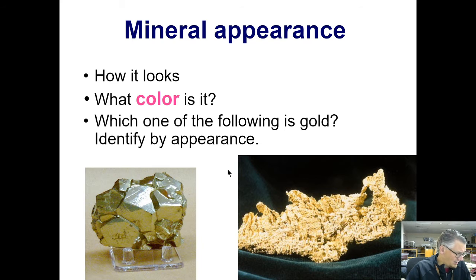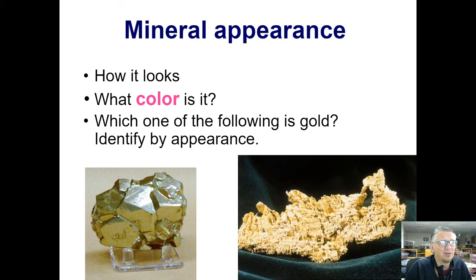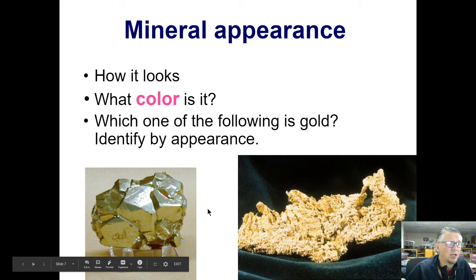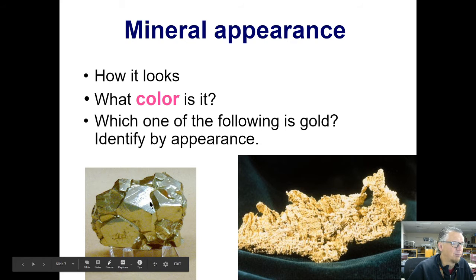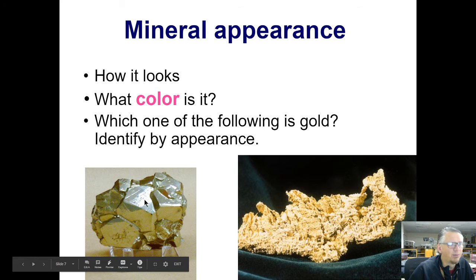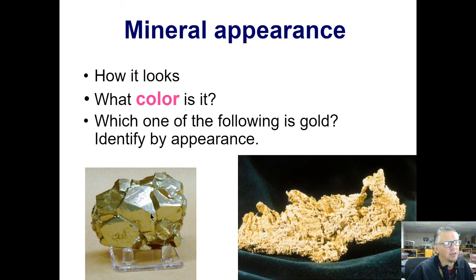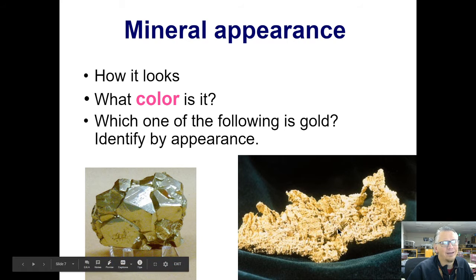So how can we determine a mineral? A lot of times color isn't all that important. We have two different minerals here — one is gold and one is fool's gold. The one on the left is pyrite, fool's gold; it's an iron ore. And the one on the right is actually gold, and that's how you might find it.